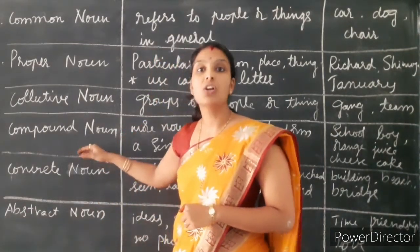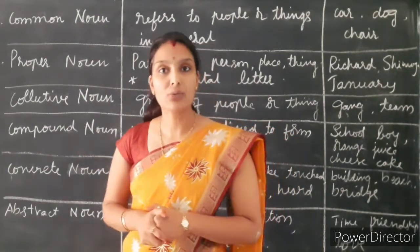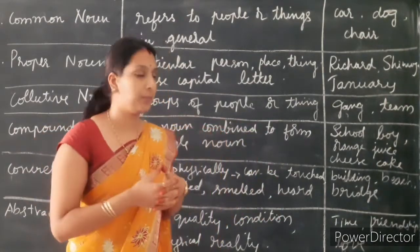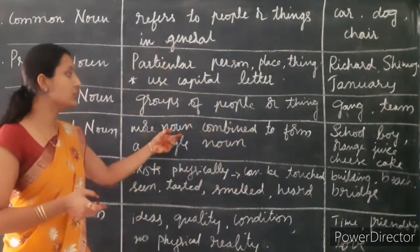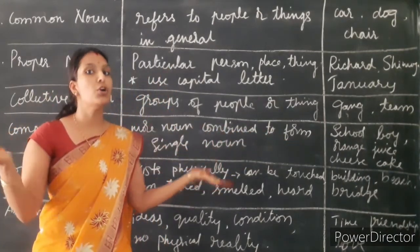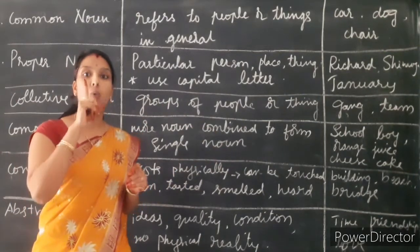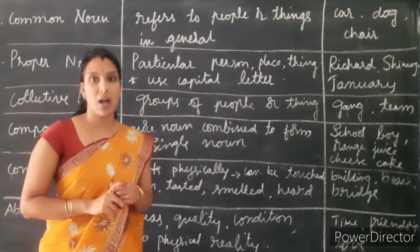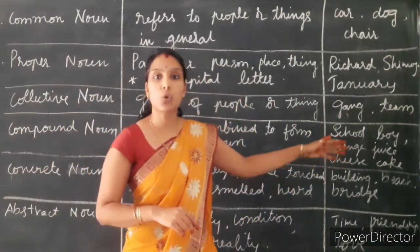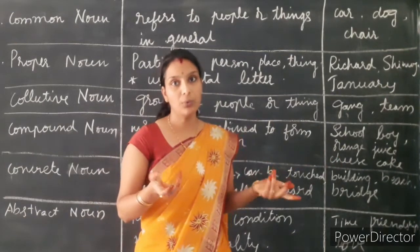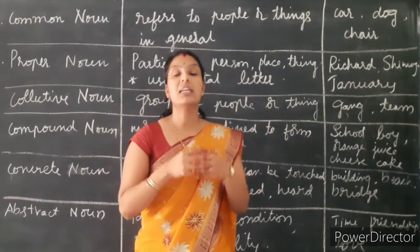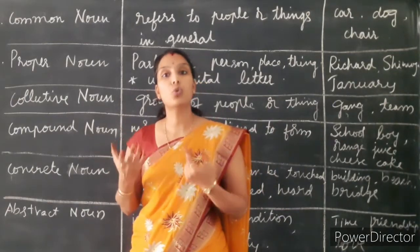Next one is compound noun. Compound nouns are nothing but when two nouns are combined together. Two or more nouns combine to form a single noun — it's called compound noun. For example, schoolboy. Here the word school is also a noun, the word boy is also a noun, and both nouns together make a new noun — schoolboy.